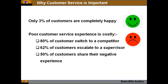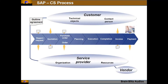From the SAP CS perspective, the process involves two parties: the customer and the service provider, with possibly a vendor involved as well. There will be an outline agreement between the service provider and customer — for example, an AMC (Annual Maintenance Contract). Also, when a product is bought, there is a warranty period — one year or two years — and within that warranty period, repairs will be covered under an agreement.